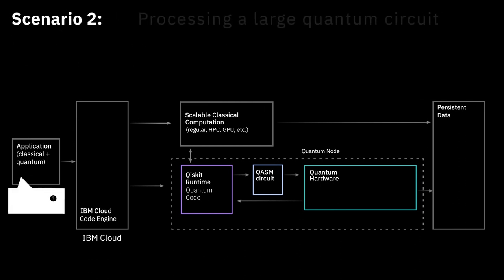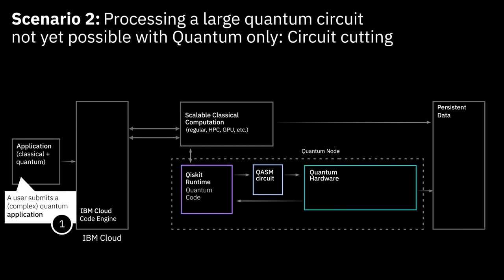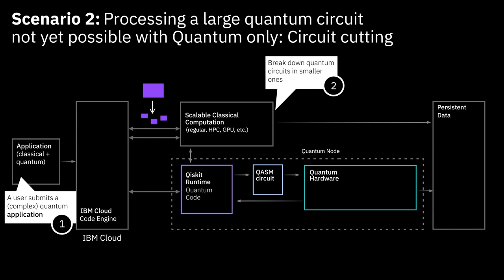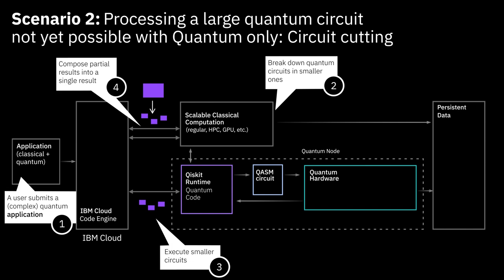The second scenario that is really interesting is processing a large quantum circuit by using classical compute in support of that. As you've heard from Blake, it is possible to cut a large quantum circuit — one that's larger than what we can usually process in a standalone fashion — into smaller quantum circuits, have them run on smaller quantum machines, and use the partial results to compose the overall result using classical compute. Classical compute cuts the circuits into smaller ones, and once the quantum machines are done processing, we take the partial results and return them back to the requester.